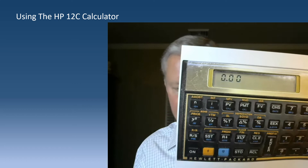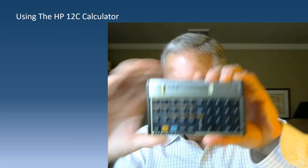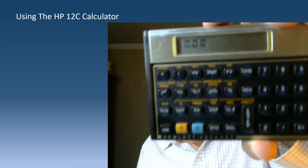To set the number of decimal places, hit F and then the number. F2 gives you two decimal places, F4 gives you four, F6 gives you six. The calculator defaults to two decimal places, which for most finance calculations corresponds to cents and is just fine.